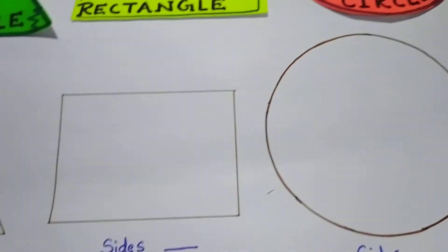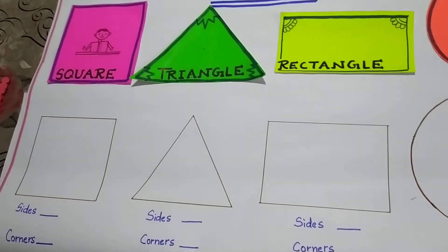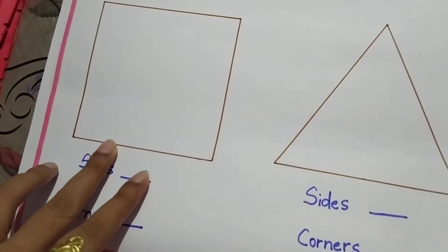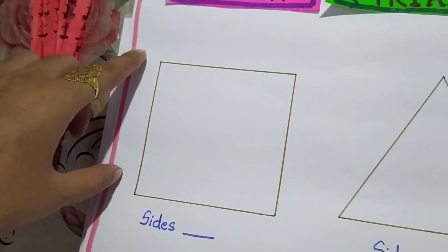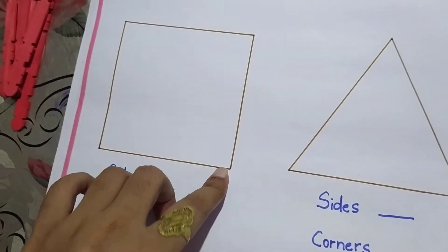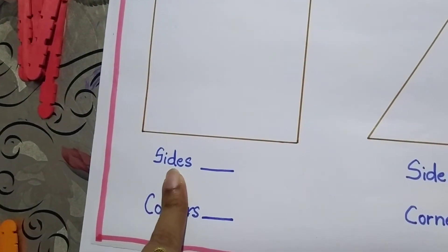Now let us see how to find out the number of sides and corners. The number of straight lines that form the figure will tell you the number of sides. The straight lines we make to form the figure will tell us the number of sides.